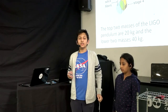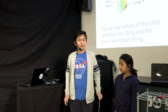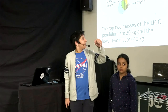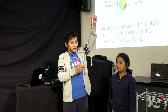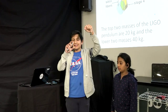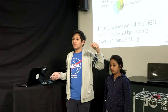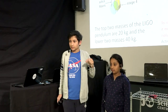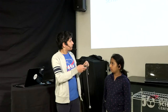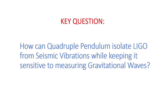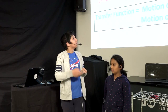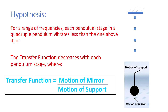LIGO uses a stacked pendulum — four stacked pendulums — called a quadruple pendulum. Each pendulum reduces the amount of vibration until it reaches the fourth pendulum, where we want the least possible vibrations. Weiss explained this concept and told everyone to try it out — and that's exactly what we decided to do. We ran an experiment to test if the quadruple pendulum actually works.